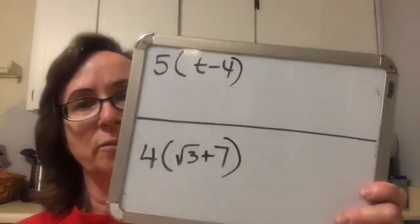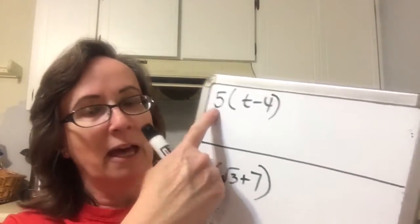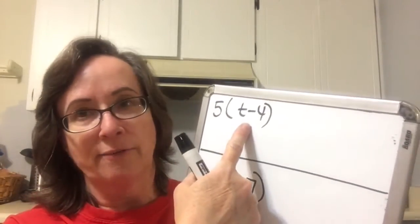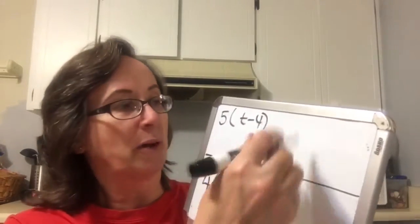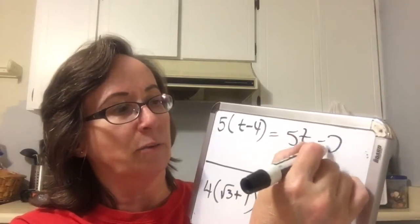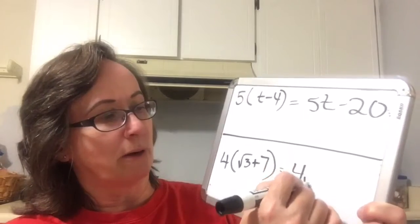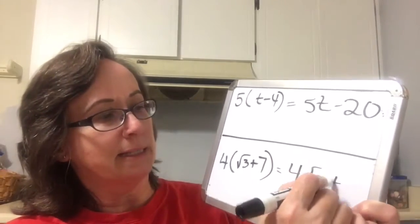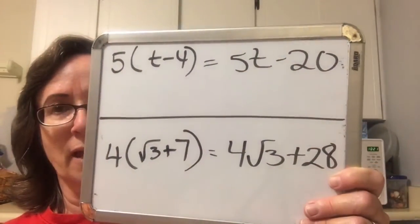Now we're moving into multiplication. We've done addition and subtraction — now we're moving into multiplication, and they're going to start us out with a constant in front of a binomial — a distribution problem. That's just going to be 5t minus 20, and this one is going to be 4 square root of 3 plus 28.